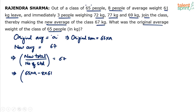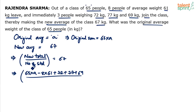Eight people of average weight 61 kg left the group, so we have 65A minus 8 times 61. Then three new people joined with weights 72, 77, and 69. The new sum is 65A minus 8×61 plus 72 plus 77 plus 69. This is divided by the new number of students: initially 65, minus 8 who left, plus 3 who joined.